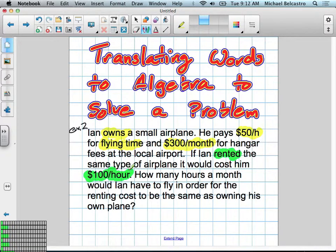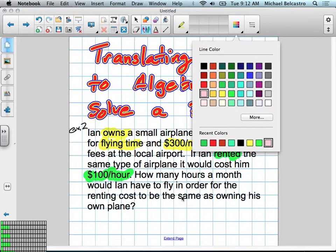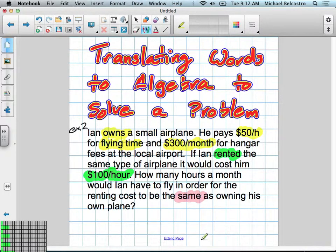How many hours a month would Ian have to fly in order for the renting cost to be the same? So the costs, they want them to be the same. This is essentially our important parts of information here.